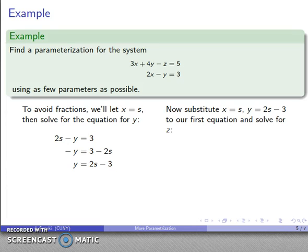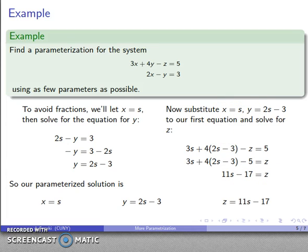Now I have this variable z left over. I have two variables expressed in terms of parameters. I can substitute those into the first equation. That's 3x, which is 3s, plus 4y, which is 4 times 2s minus 3, minus z equals 5. I can solve this equation for z. So now I have z expressed also in terms of my parameter. Now I have all three variables expressed in terms of the parameterization of s.